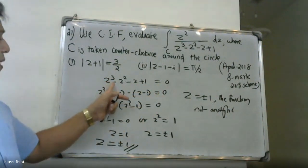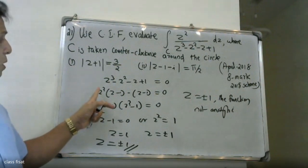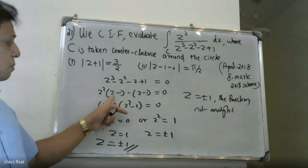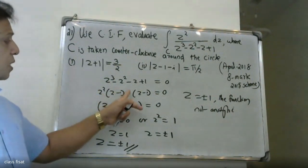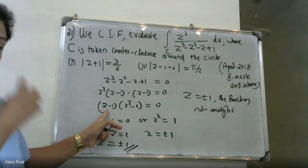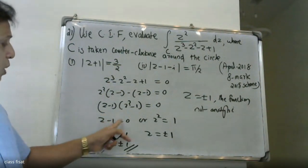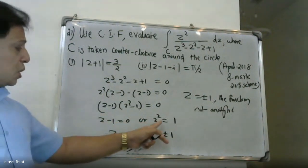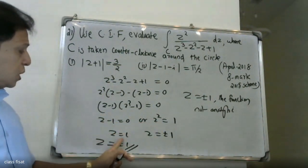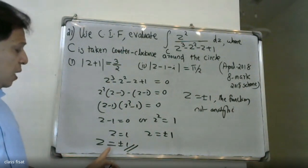Working through the factoring from z squared minus 1, we get a repeated factor of z minus 1. So the denominator factors as (z minus 1) squared times (z plus 1), giving singular points z equals 1 (repeated) and z equals minus 1.